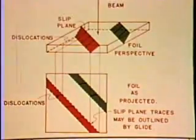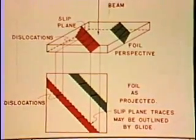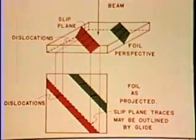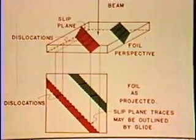The short curved dislocation lines observed by transmission electron microscopy are segments which extend from top to bottom of the crystal. Dislocation segments are also seen gliding on parallel slip planes, since the shear stresses on such planes are approximately equal.